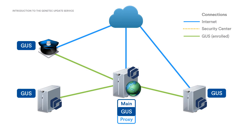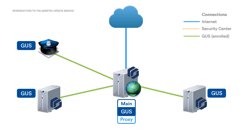Additionally, the main GUS is configured as the proxy, will receive updates from the cloud, and distribute those updates to the local machines. This way, we don't need to have every server and client machine connected to the Internet, and can reduce the number of downloads required to update an entire system.